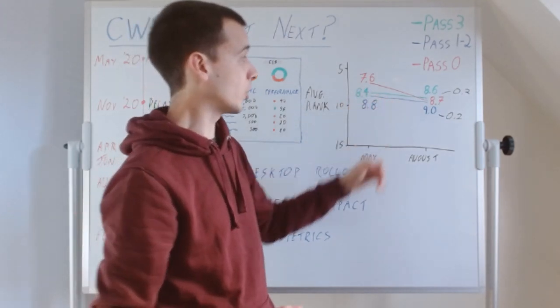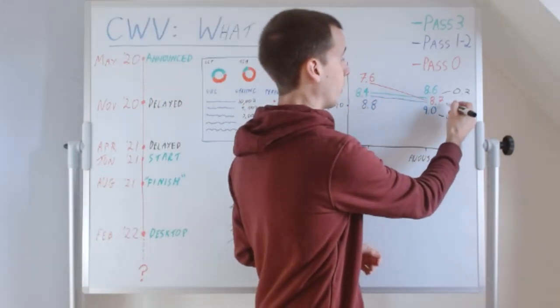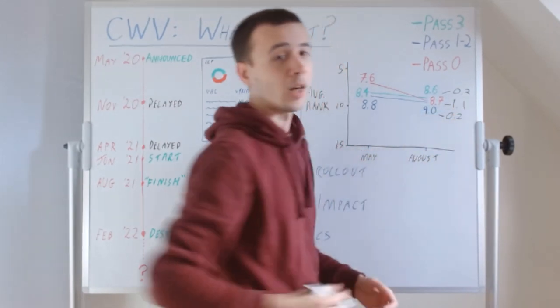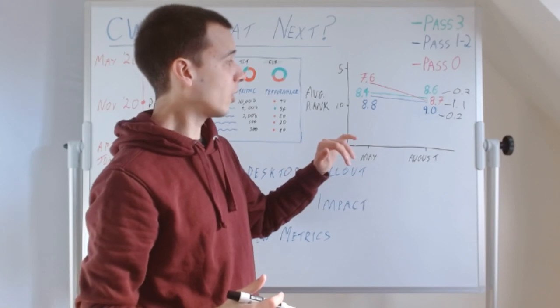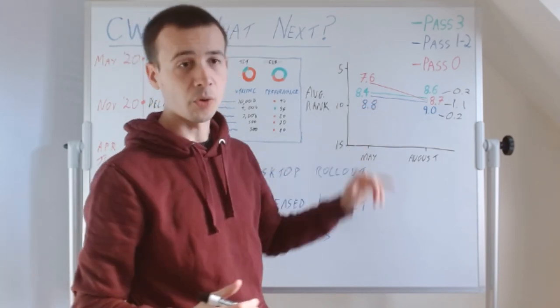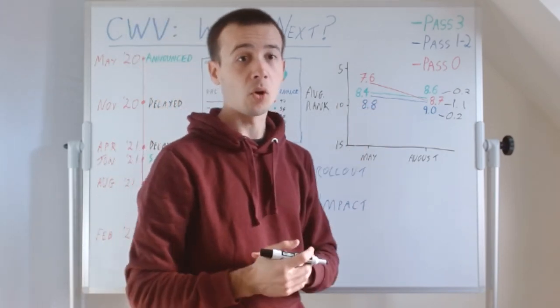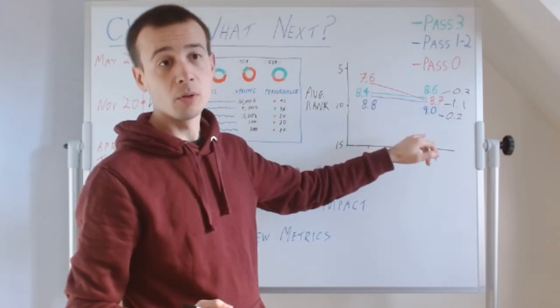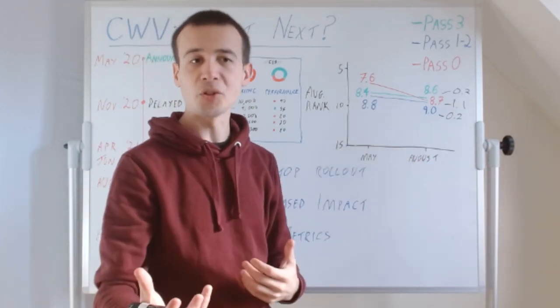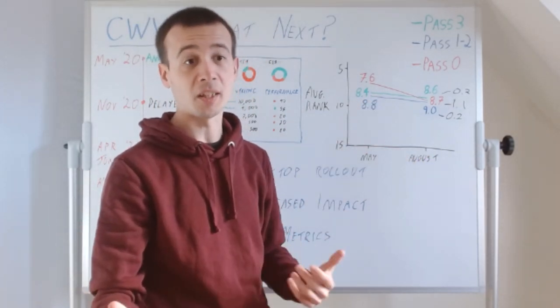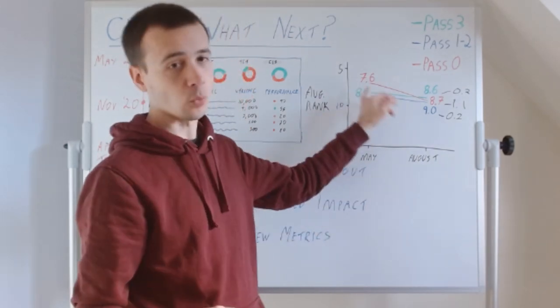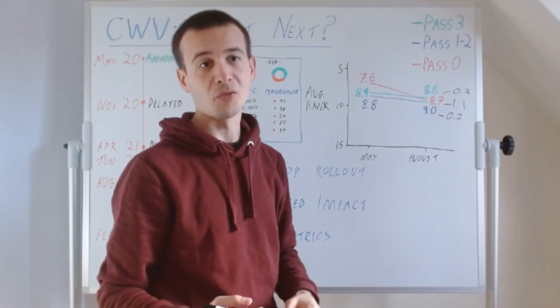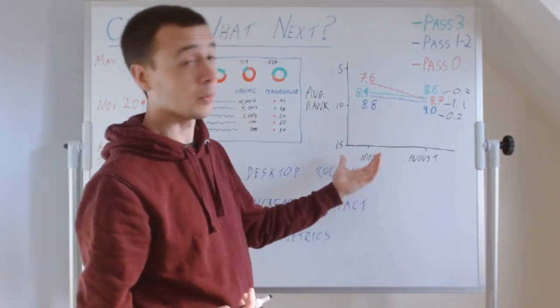The really noticeable thing was the pages that passed 0. The pages that passed 0 thresholds, they went down by 1.1. They went down by 1.1 positions. So instead of it being pass all three and get a boost, it's more like pass 0 and get a penalty. Or you could rephrase that positively and say the exact same thing as pass 1 and get a boost relative to these ones that are falling off the cliff and dropping over one ranking position.